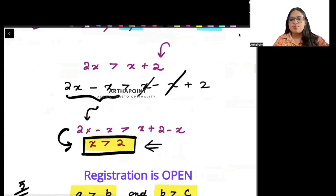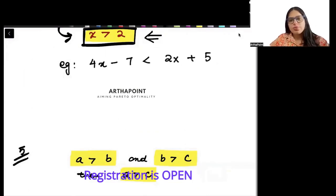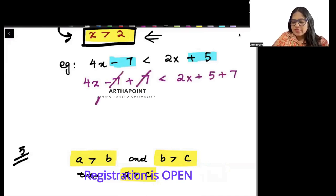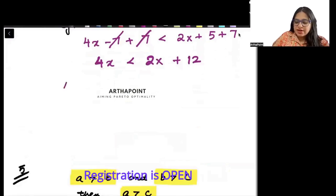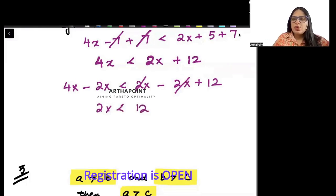Another example: 4x minus 7 less than 2x plus 5. First, add 7 to both sides — this cancels the minus 7, giving 4x < 2x + 12. Then subtract 2x from both sides to get 2x < 12. Finally, divide both sides by 2, so x is less than 6.